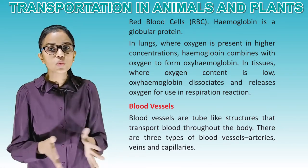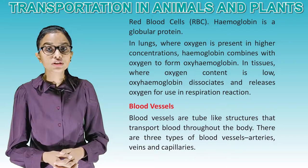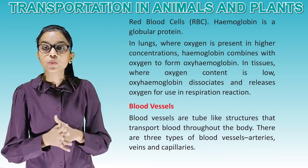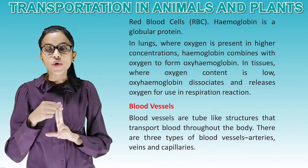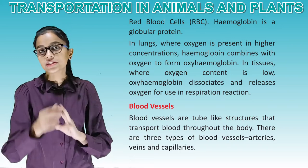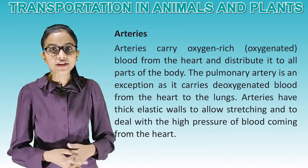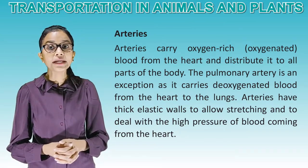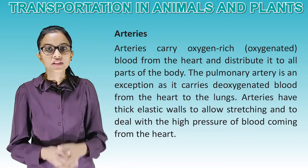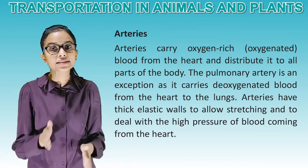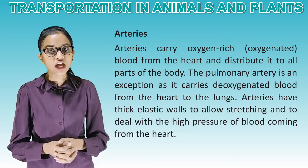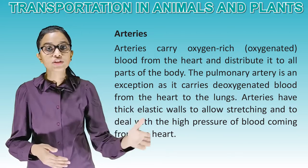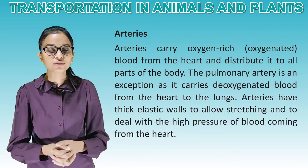Blood vessels are tube-like structures that transport blood throughout the body. There are three types of blood vessels: arteries, veins, and capillaries. Arteries carry oxygen-rich blood from the heart and distribute it to all parts of the body. The pulmonary artery is an exception as it carries deoxygenated blood from the heart to the lungs. Arteries have thick elastic walls to allow stretching and to deal with the high pressure of blood coming from the heart.